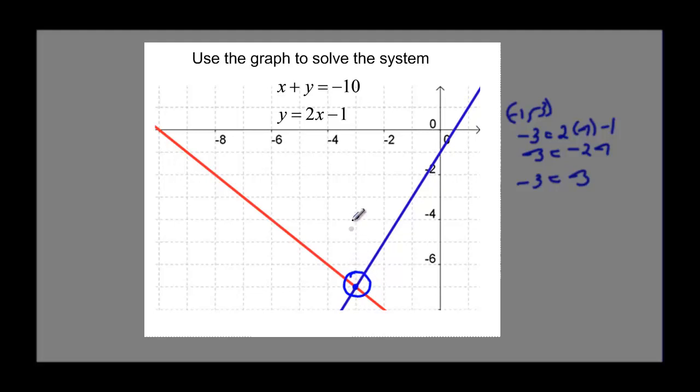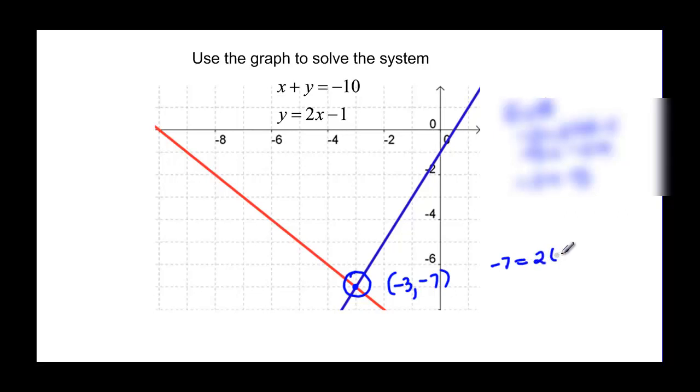And if we look at this intersection, it looks like x is negative 3, and our y is negative 7. So negative 3, negative 7 will be our solution. Plugging it into the top one, negative 3 plus negative 7 is negative 10, and negative 7 is equal to 2 times that negative 3 minus 1. Negative 7 is going to be equal to negative 6 minus 1, so it is true as well.